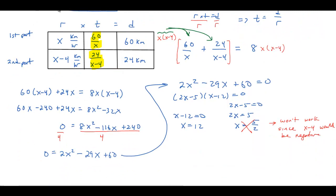So that's not going to be one of my answers. But the x equals 12 will work. And so my answer then is that the speed during the first part of the trip was 12 kilometers per hour and 8 kilometers per hour for the second part.